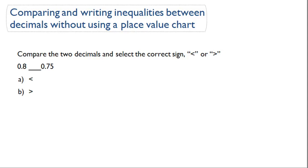Comparing and writing inequalities between decimals without a place value chart. Compare the two decimals and select the correct sign, less than or greater than. Alright, so we have .8 and .75.